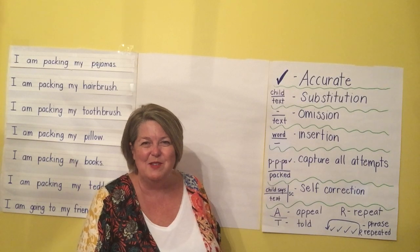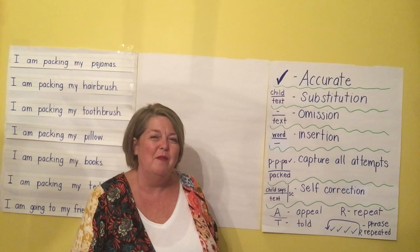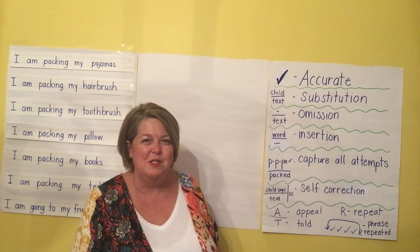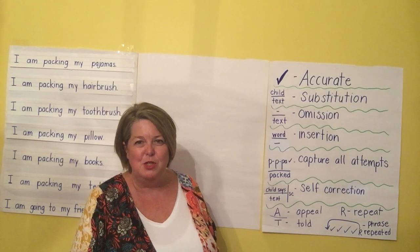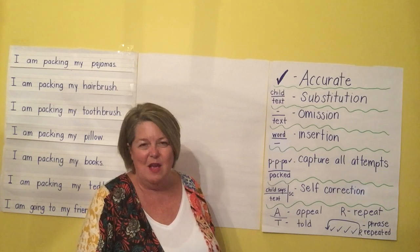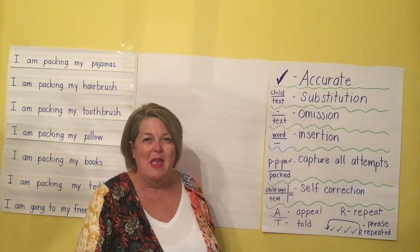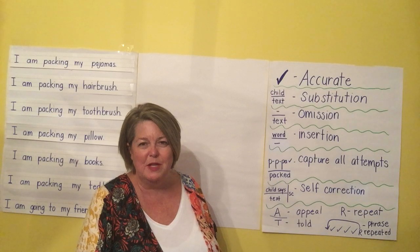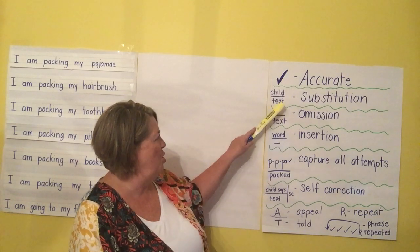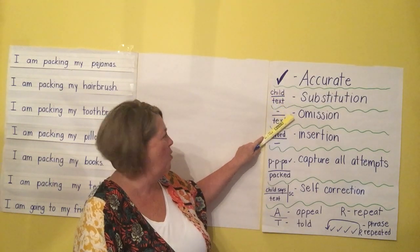I'm having a major thunderstorm at my house right now, so you probably heard the thunder roaring. I hope what I was just saying makes sense — I'll show you that in just a few minutes if it was a little bit confusing. The next type of error is a substitution, and it's exactly what it sounds like — the child substitutes a word. When you record on a running record, you create something that looks like a fraction. What the child says is always written on the top and what the text actually says is on the bottom. When you record a substitution, it would look like that — what the child says, and then what the text actually is.